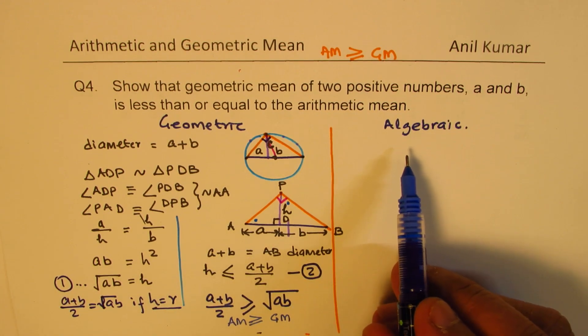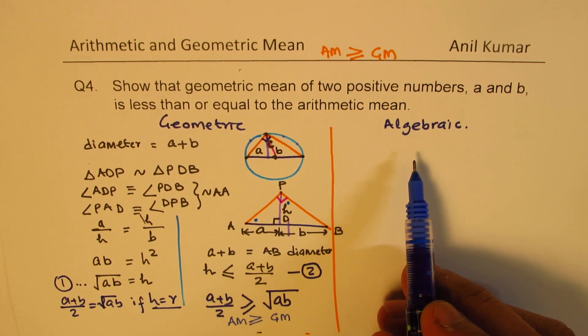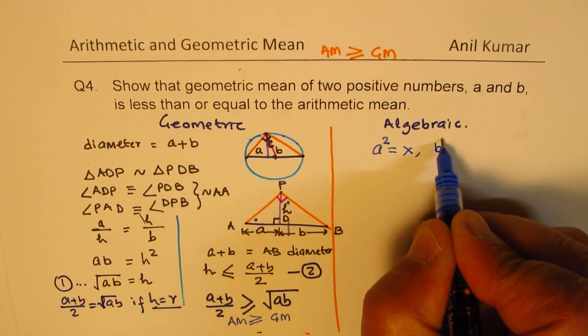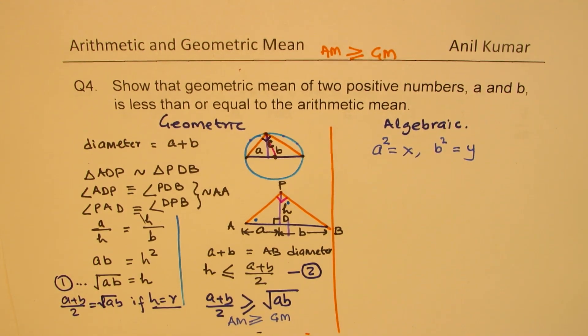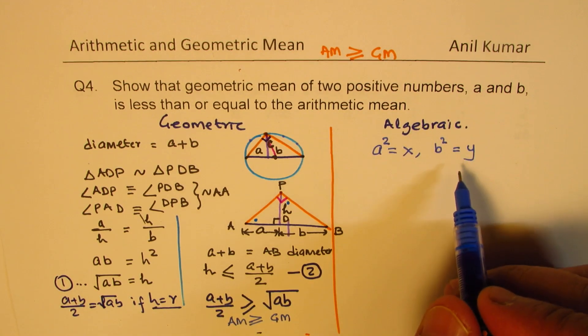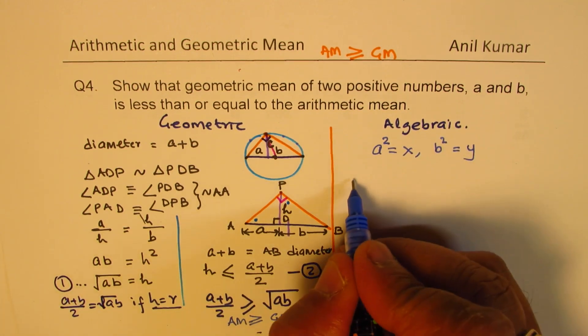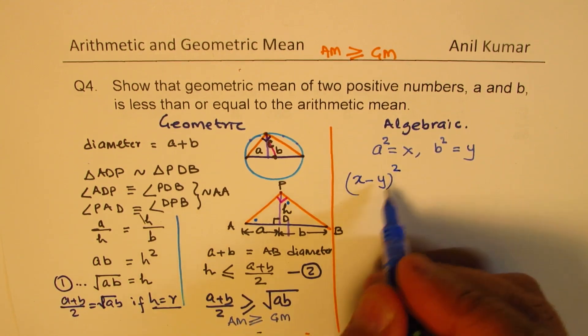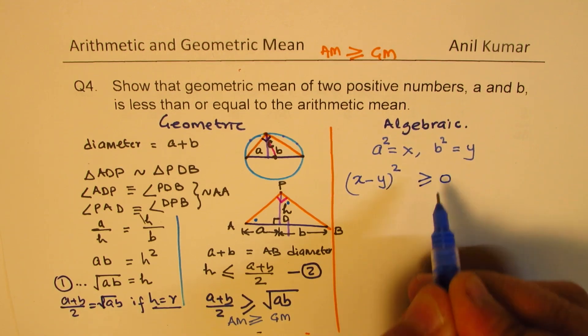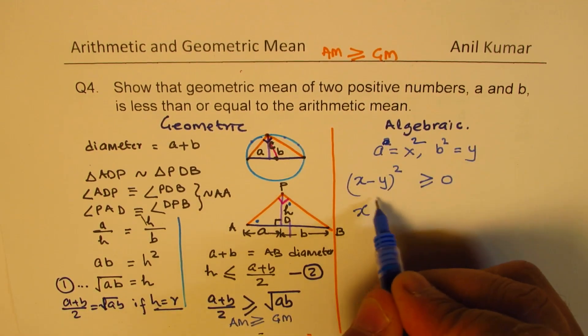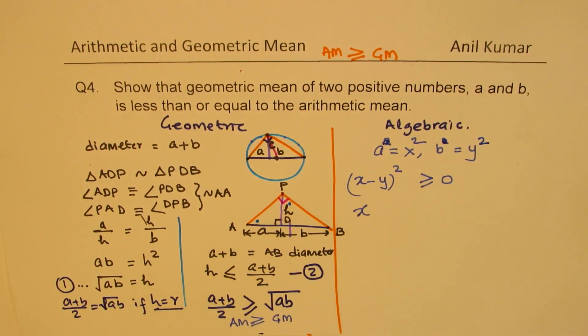Now let's also try to prove the same using algebra. So what we will do here, we will do a kind of substitution. Let us say A square is equal to X and B square equal to Y. So let's assume this. And we are given that A and B are both positive numbers. In that case, what is going to be X minus Y whole square? Whatever, it is definitely going to be greater than or equal to 0. Is that clear to you? Now this could be written as, let's take A as X square, since I was starting with X square minus Y square, and B as Y square.